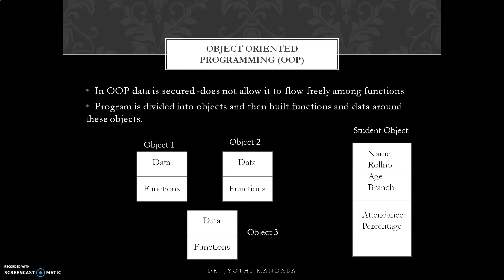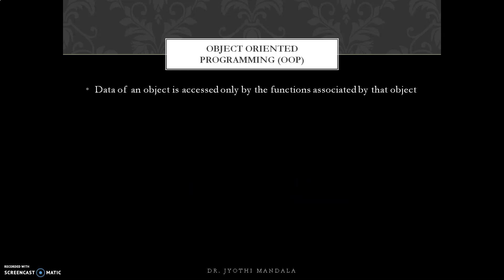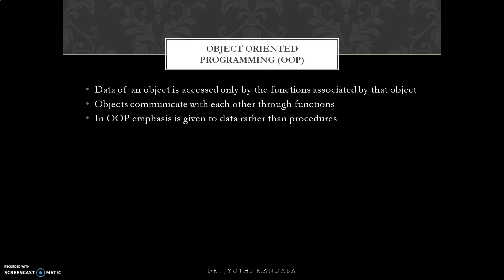A program is divided into multiple objects — object 1, object 2, object 3 — and all these objects together form the program. There is no concept of a global variable here: object 1's data is accessed only by object 1's functions, and object 2's data only by object 2's functions. Objects communicate with each other through their associated functions. The emphasis in OOP is given to data rather than procedures — our focus is on securing the data.